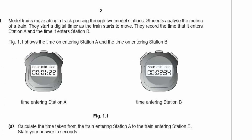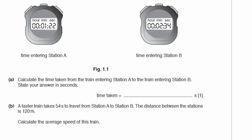Question 1. Model trains move along a track passing through two model stations. Students analyse the motion of a train. They start a digital timer as the train starts to move. They record the time that it enters station A and the time that it enters station B. Part A: calculate the time taken from the train entering station A to the train entering station B. State your answer in seconds.